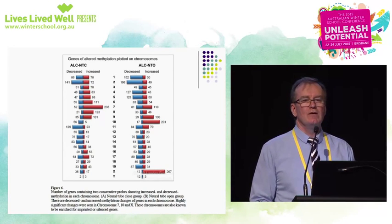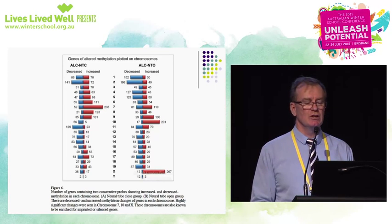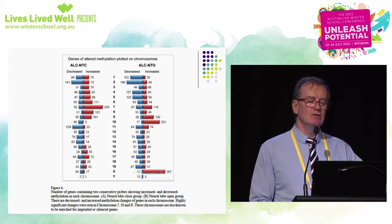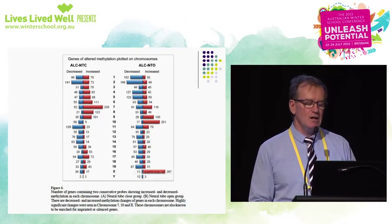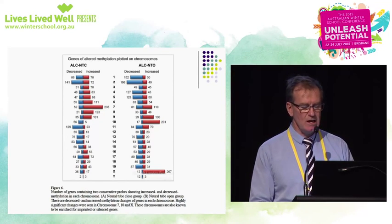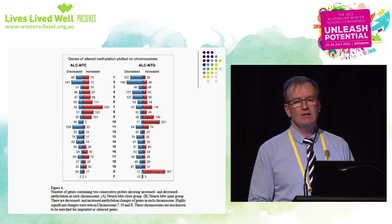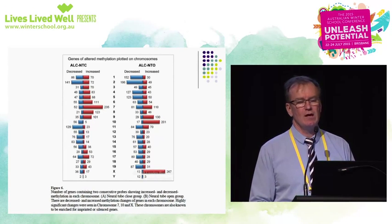This is a map of mouse chromosomes — which is why there's only 19 plus X and Y — showing changes in methylation. Methylation is a switch to turn genes on and off. Pretty much every gene was affected to some degree, but there were very significant changes on chromosomes 10, 7 and chromosome X. This is what I meant when I said alcohol is not subtle: it's like someone took a shotgun to your genes and just splattered every one of them, changing the way they express themselves.